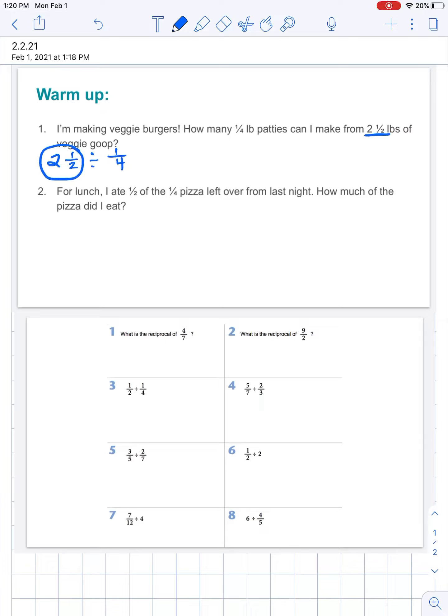First step, let's go ahead and turn this two and a half into an improper fraction. Two times two is four plus one is five, so we're doing five over two divided by one fourth. Now when we divide, we're really just going to multiply. We're going to take this second fraction and flip it. You might have heard in some of those videos from yesterday or this morning, copy dot flip.